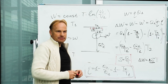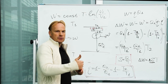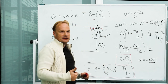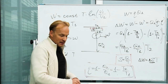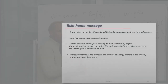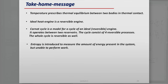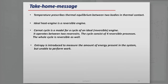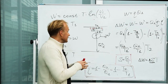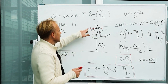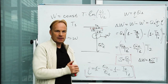Entropy originates from the Greek word 'entropya,' which means turning toward a transformation. It is a measurement of energy which is present in the system but is not able to perform work. So let's take the home message of today. Temperature is not something that you measure with a thermometer — it's something that prescribes thermal equilibrium between two bodies in thermal contact. The ideal heat agent is always a reversible agent. In order to understand how agents work, we have to distinguish reversible and irreversible processes. And entropy is introduced to measure the amount of energy which is present in the system but unable to perform work — in this particular case, unable to perform work because there was an irreversible process. Thank you for your attention.